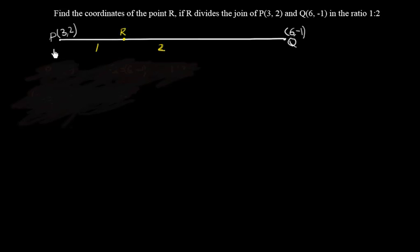And just join them and let's take the point R here and let's think that this is dividing this segment in the ratio 1:2.